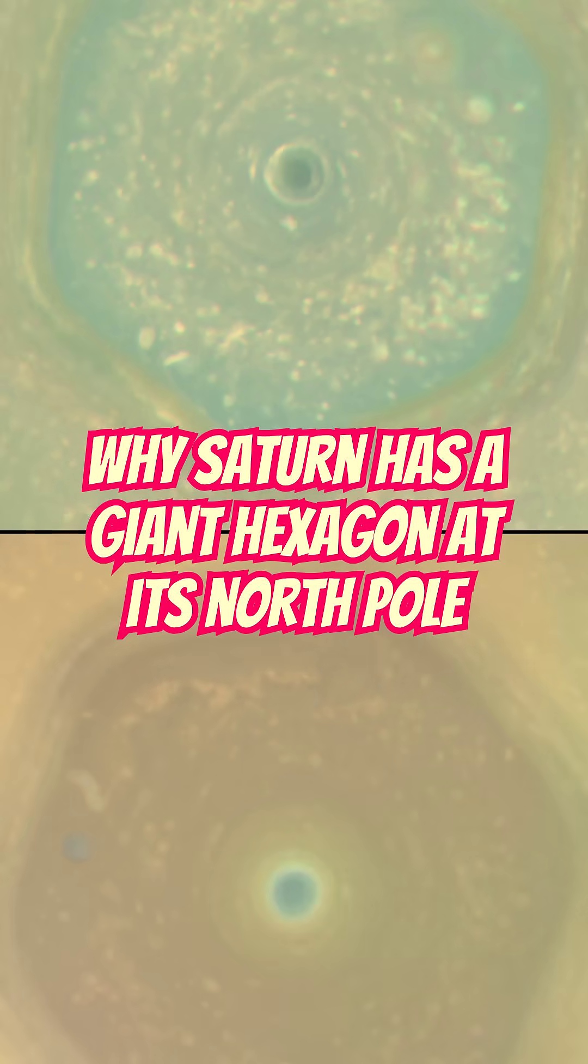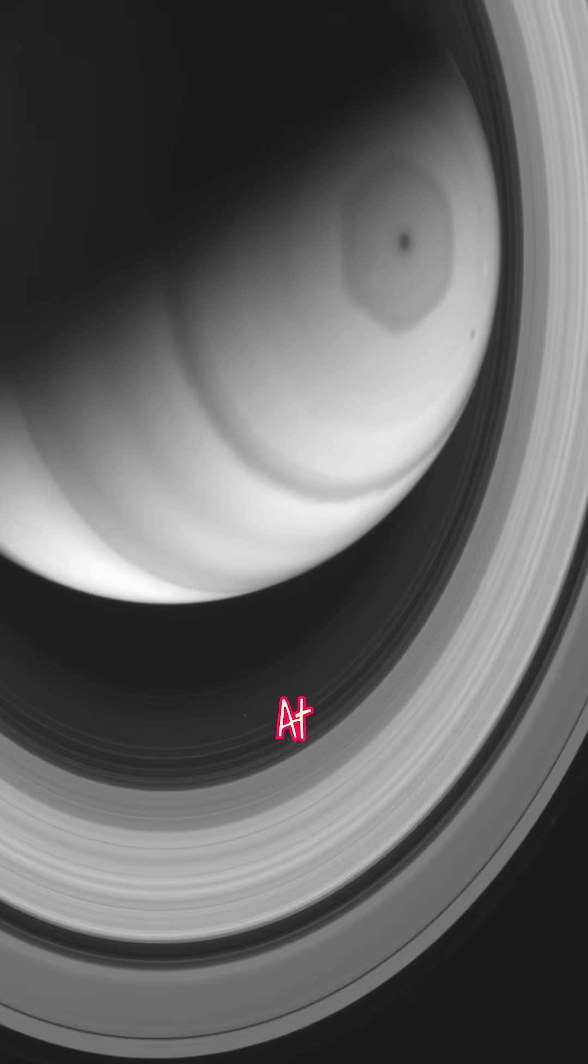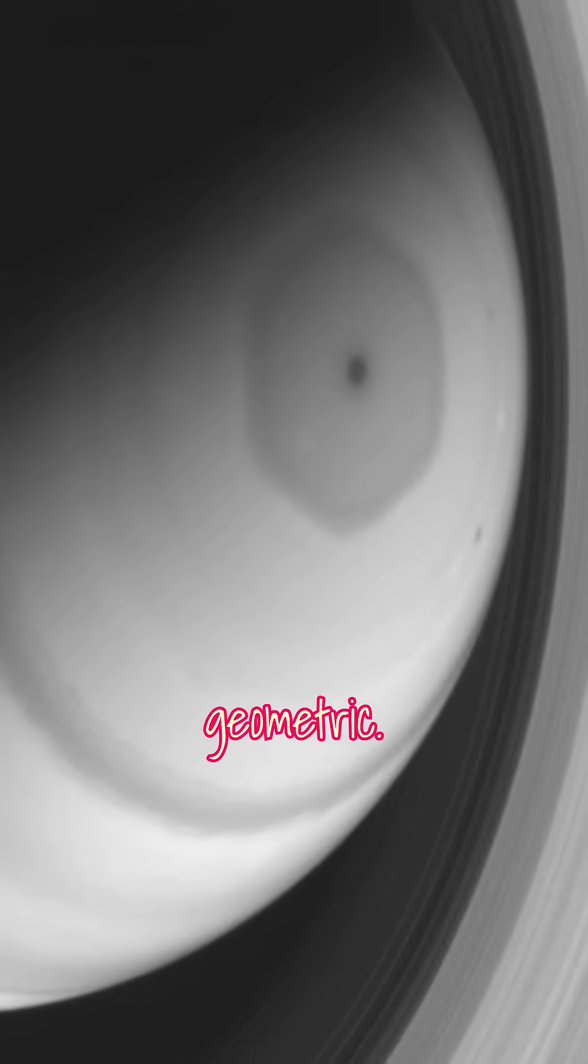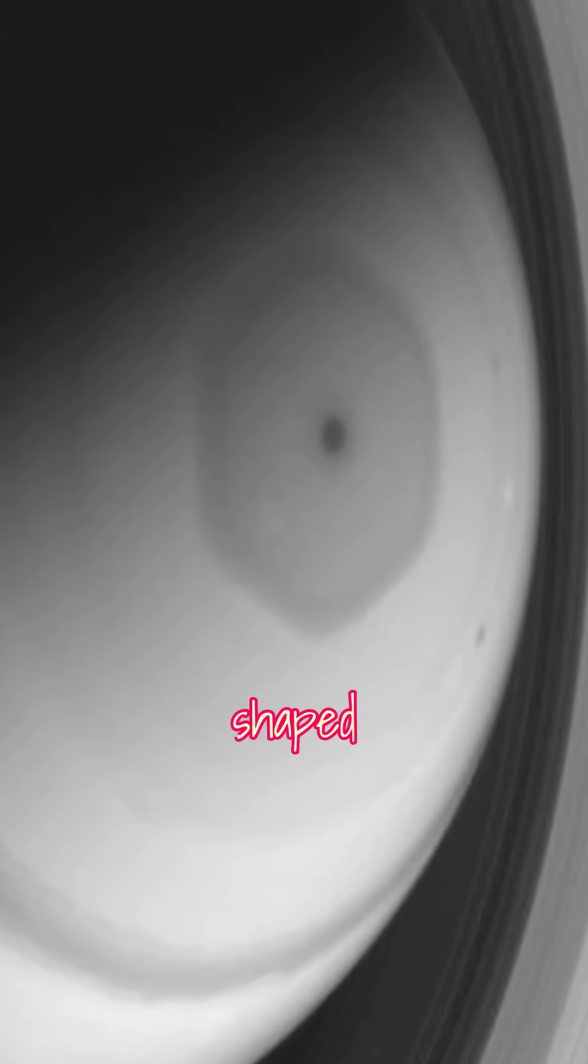Why Saturn has a giant hexagon at its North Pole? At the North Pole of Saturn, there's something strange, something geometric, a storm shaped like a hexagon.